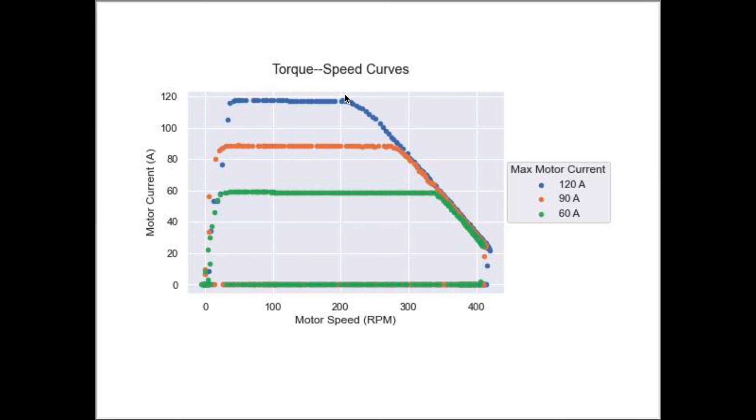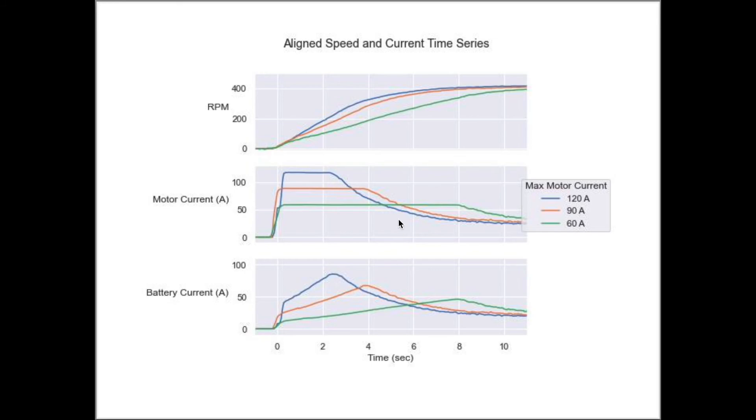Here are some takeaways. Increasing the maximum motor current limit increases the initial acceleration but not the top speed. Increasing the maximum motor current limit requires a higher amount of battery current in the mid-RPM range.